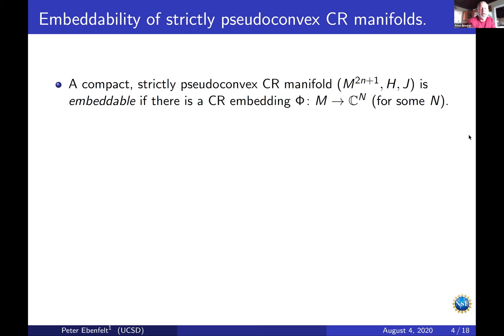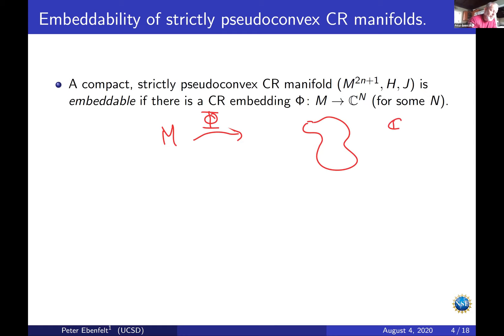What do we mean by embeddability? We're going to be a little more generous and not require the CR manifold to be the boundary of a domain. We say it's embeddable if there's a CR embedding phi that sends it into C^N for some N possibly much larger than the dimension. By Harvey and Lawson, the image phi(M) is the boundary of some possibly singular complex analytic variety V.